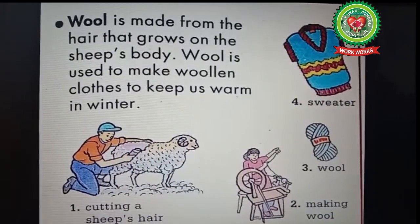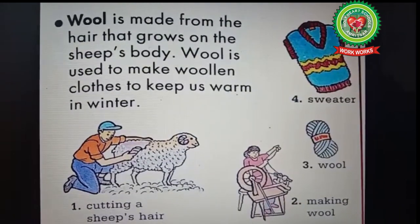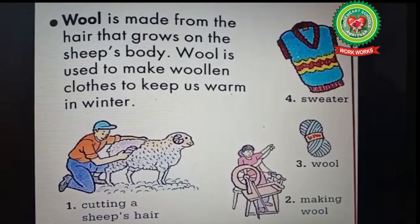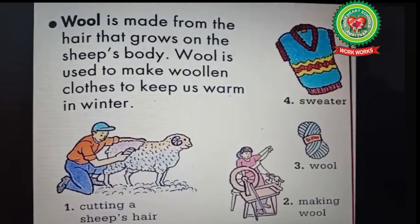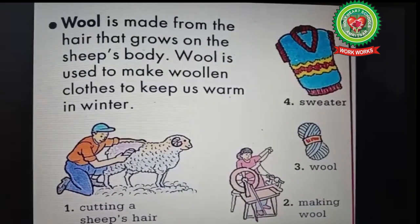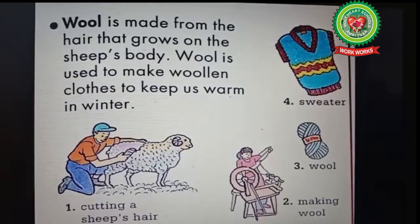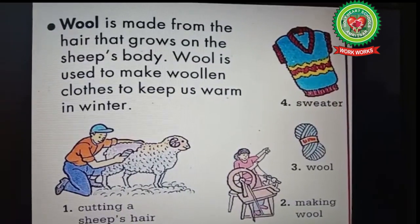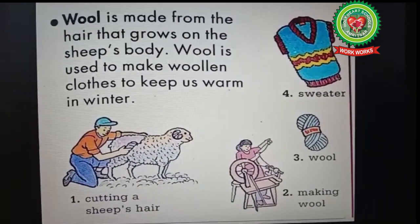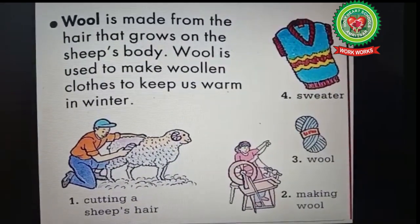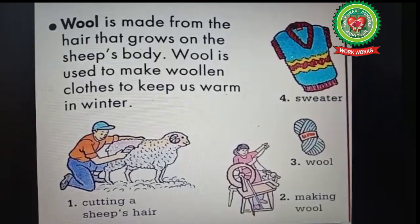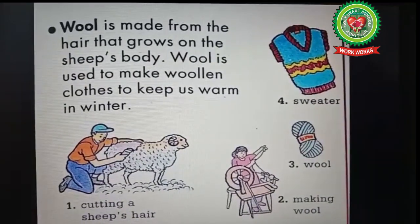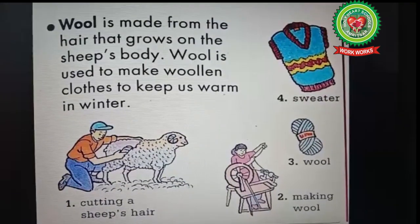The fibers we obtain from plants and animals are known as natural fibers. Today we will read about two fibers which we get from animals — that is wool and silk. So first we will start with wool. The fiber which is obtained from the hair or fur of an animal's body is known as wool.